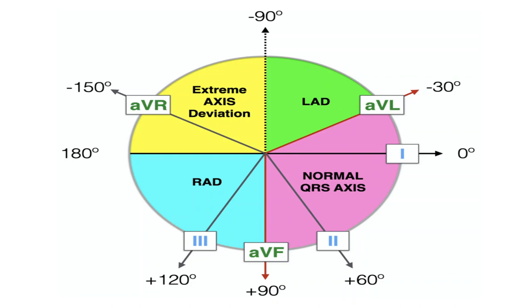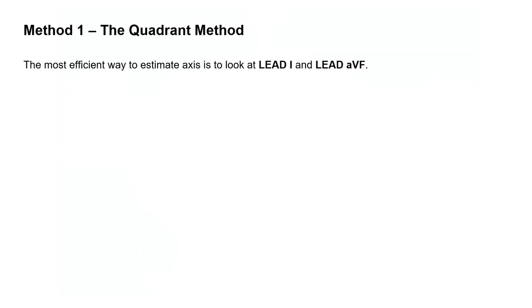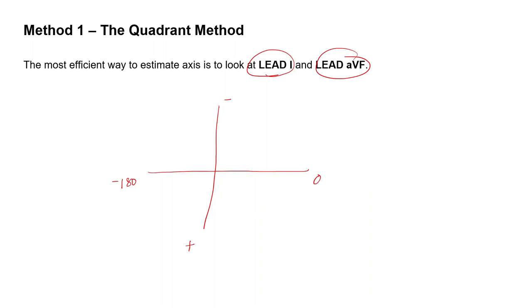The first method is the quadrant method and it is the most commonly used method. In this method, we look at only two leads: Lead 1 and Lead AVF. Lead 1 is at 0 degrees, with minus 180 on one side and plus 0 on the other. Lead AVF runs perpendicular — positive pole at plus 90, negative pole at minus 90. We will see the R wave in Lead 1 and in Lead AVF, and determine the vector direction from whether those waves are positive or negative.